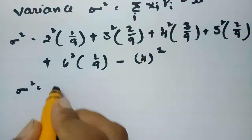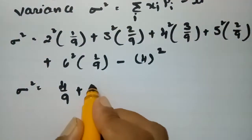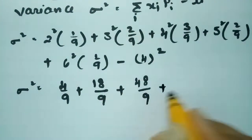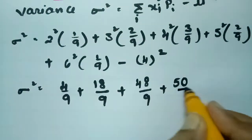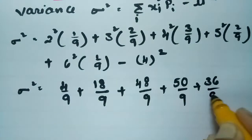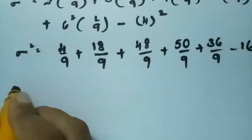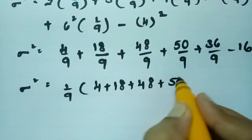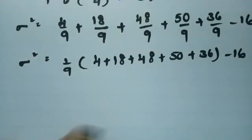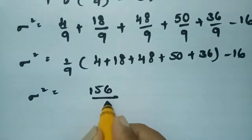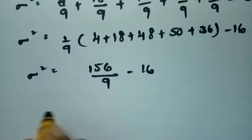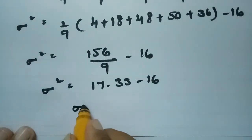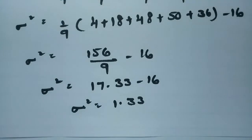Computing each term: 4/9 + 18/9 + 48/9 + 50/9 + 36/9 − 16. Taking 1/9 common gives (4 + 18 + 48 + 50 + 36)/9 − 16 = 156/9 − 16 = 17.33 − 16 = 1.33. So the variance σ² = 1.33.